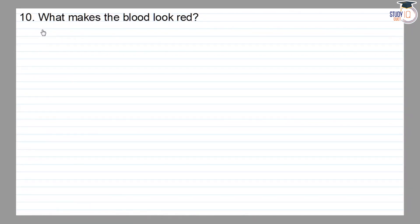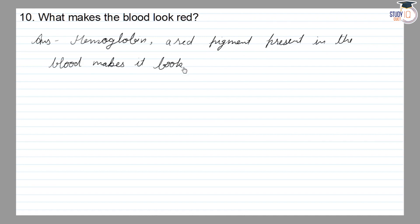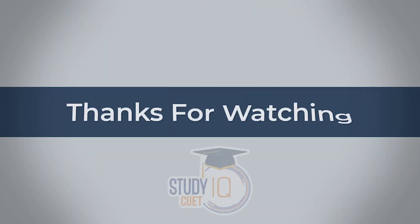Class, we have a question: what makes the blood look red? The answer is hemoglobin — the red pigment present in the blood makes it look red. Thank you.